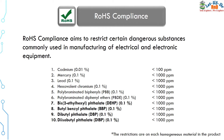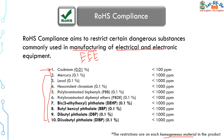The RoHS compliance program aims to restrict certain dangerous substances commonly used in manufacturing of electrical and electronic equipment, also called EEE (Electrical and Electronic Equipment). The limit specified in the RoHS directive for cadmium — considered the most harmful for human beings and the environment — is 0.01% of the homogenous weight of a product. For the remaining restricted materials, the limit is 0.1%. Homogenous materials are those which cannot be mechanically separated.